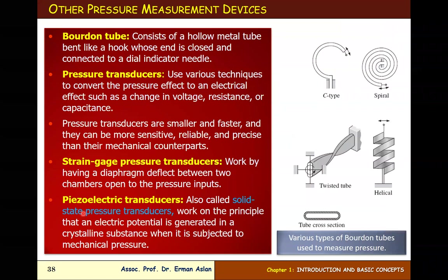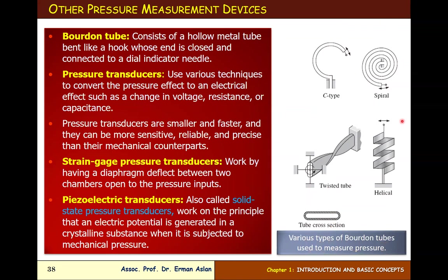Other pressure measuring devices: there are various types of Bourdon tubes used to measure pressure. These consist of a hollow metal tube bent like a hook, whose end is closed and connected to a dial indicator needle. This type is mechanical.